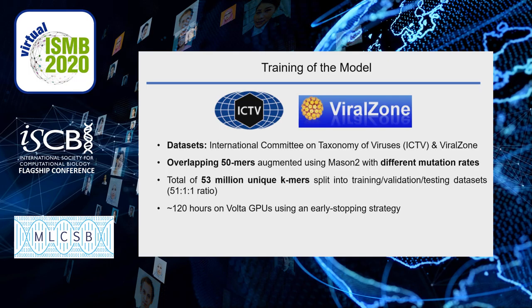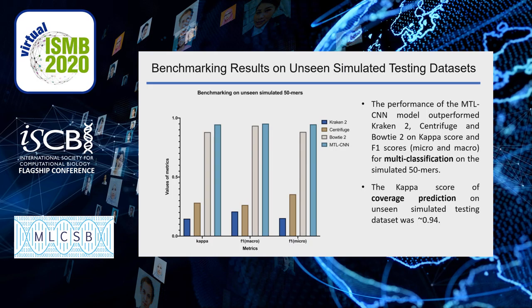The model was trained on the ICTV database and ViralZone database. Overlapping 50-mers were generated based on the reference genomes, and then were augmented using Mason-2 with different mutation rates for increasing the complexity of the dataset. In total, we generated 53 million unique k-mers. These k-mers were split into training, validation, and testing datasets. Our model was trained for around 120 hours on Volta GPUs using an early stopping strategy.